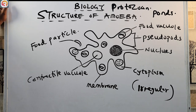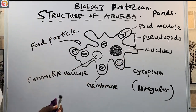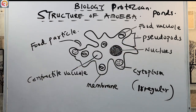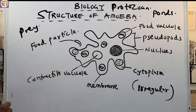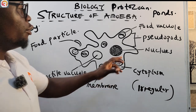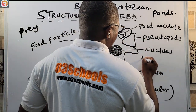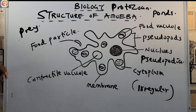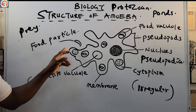Amoeba moves by means of pseudopodia. The pseudopods are extended parts of the cell membrane. They are used for movement, and also used to catch prey. The body of the amoeba flows around the food particle, extending its pseudopods toward it.